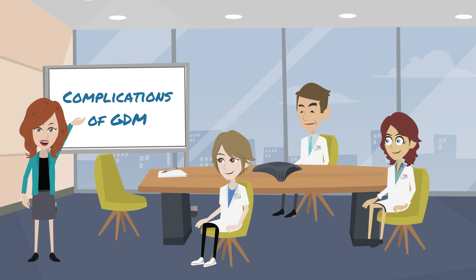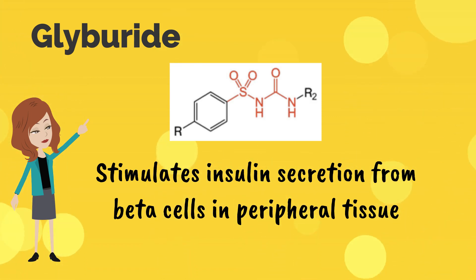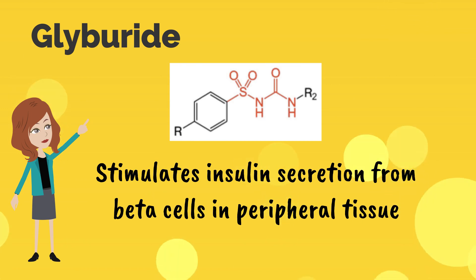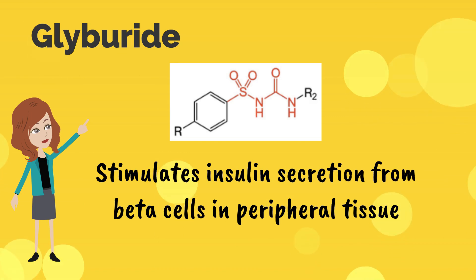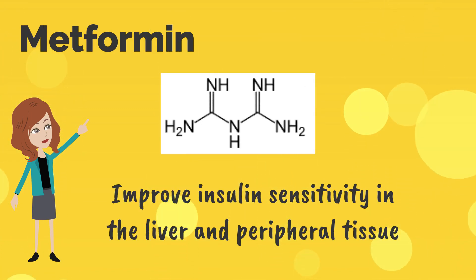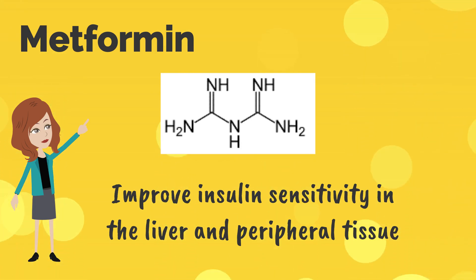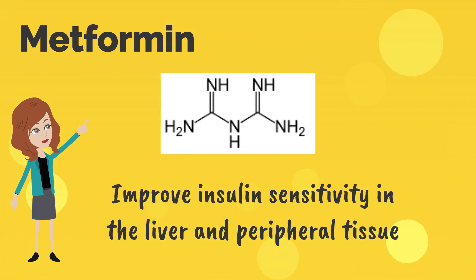Regarding medications: glyburide is a second generation sulfonylurea and should not be used in patients with a sulfa allergy. Glyburide stimulates insulin secretion from beta cells by binding to the ATP calcium channel receptors in peripheral tissues. Metformin is a biguanide and works to improve insulin sensitivity in the liver, thereby reducing hepatic gluconeogenesis. It also improves intestinal and peripheral glucose uptake through improved insulin sensitivity.